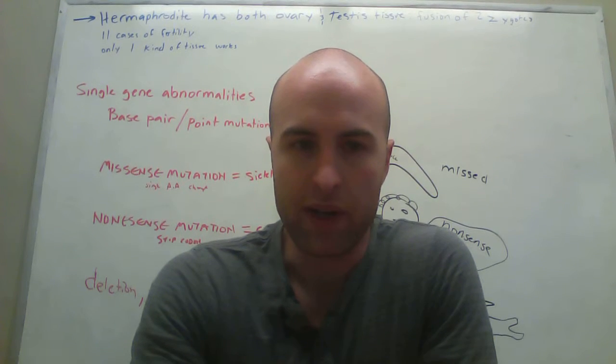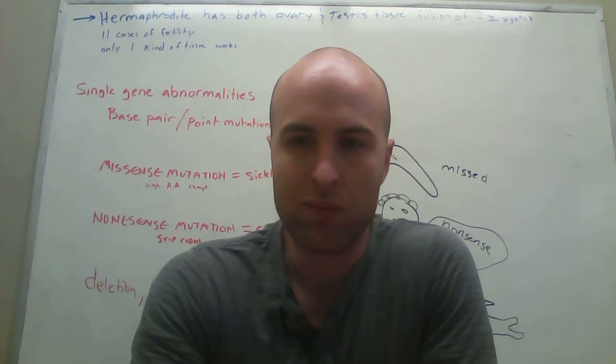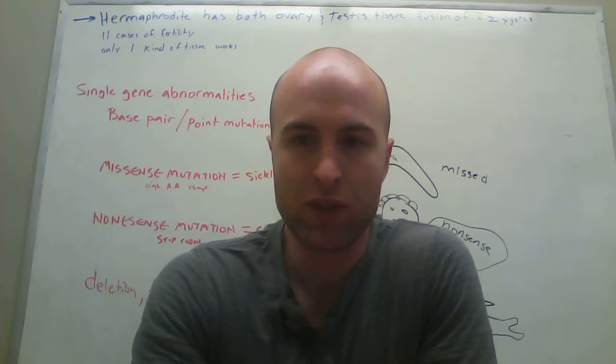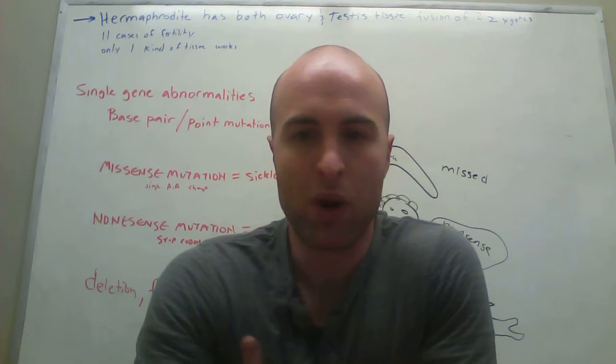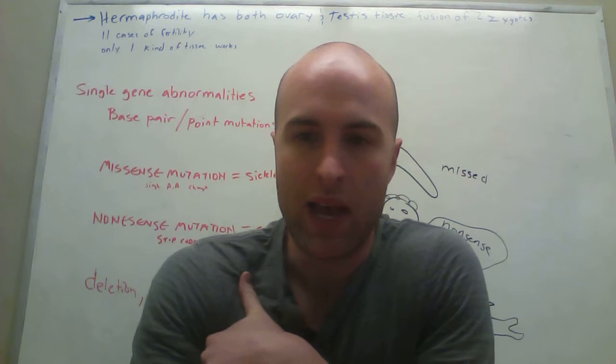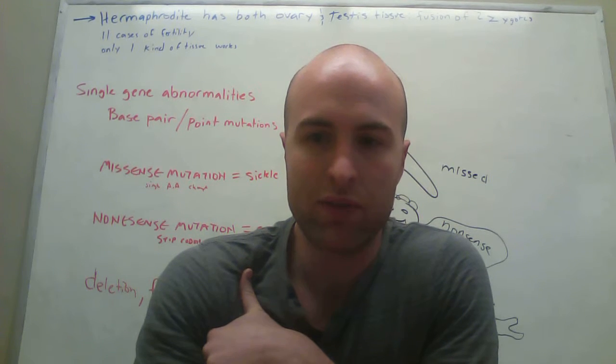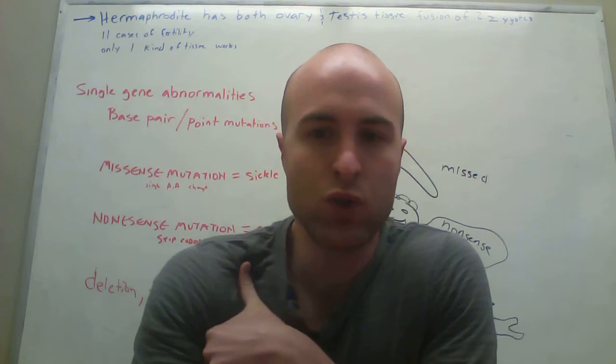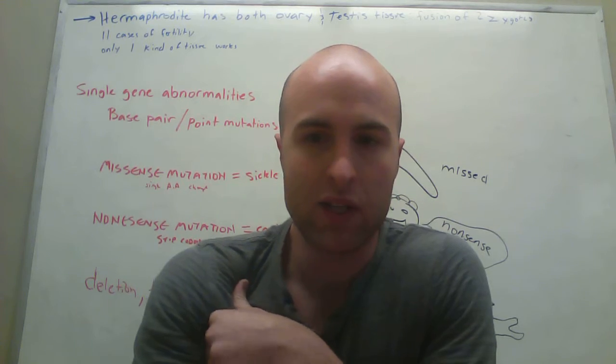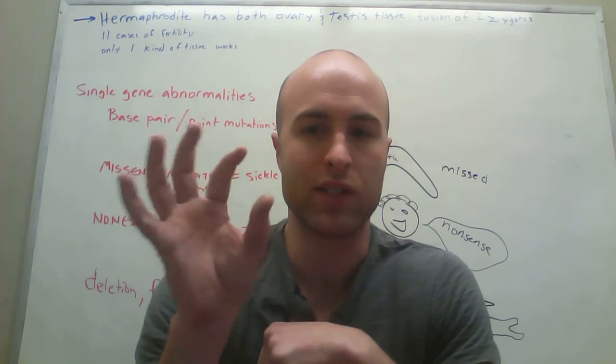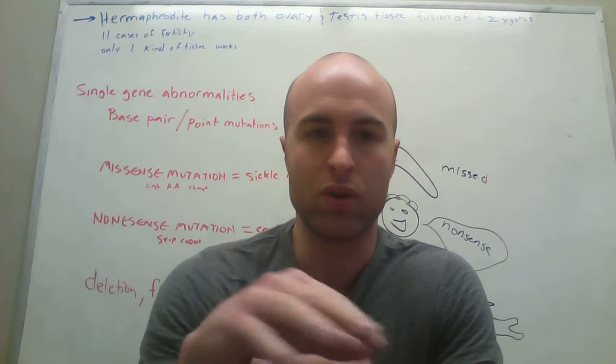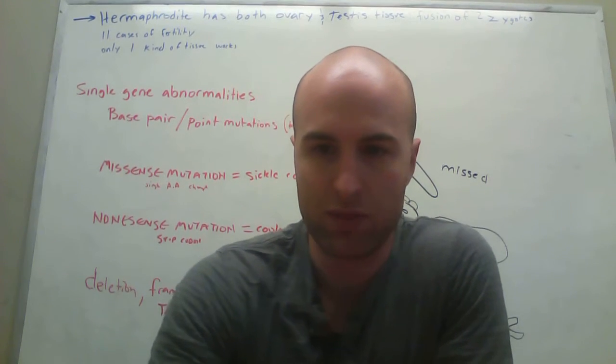Polyploidy is the presence of a complete set of chromosomes in a cell, and you need to know the difference between polyploidy and aneuploidy. Aneuploidy is the presence or absence of individual chromosomes in a cell. So polyploidy has two complete sets. Aneuploidy just has a couple individual extra or missing chromosomes.